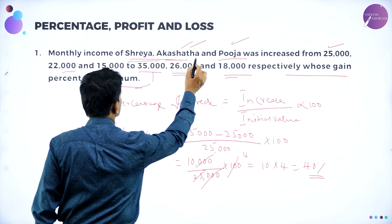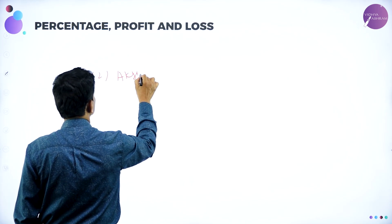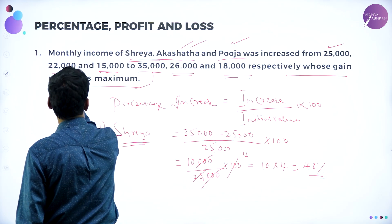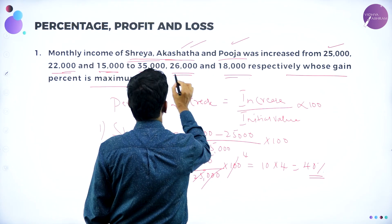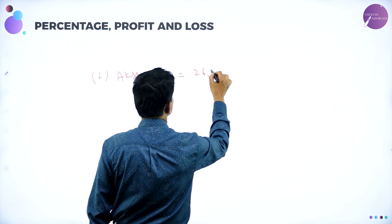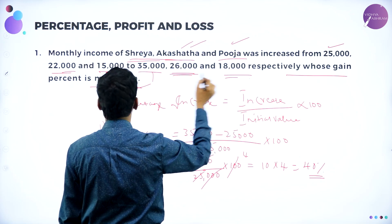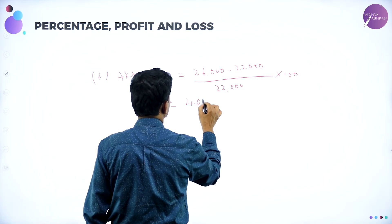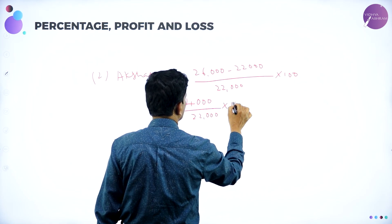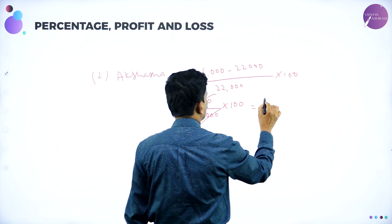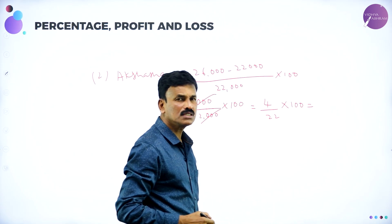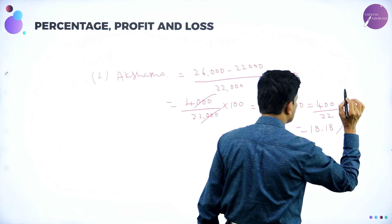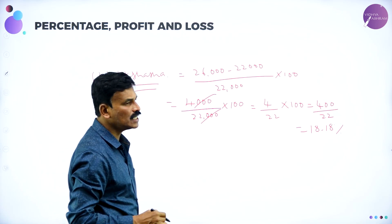Now the percentage increase for Akshata: her income increases from 22,000 to 26,000. So the increase is 26,000 minus 22,000 divided by 22,000, into 100. That is 4,000 divided by 22,000 into 100, which equals 400 divided by 22, equal to 18.18 percent.